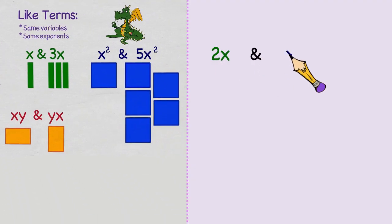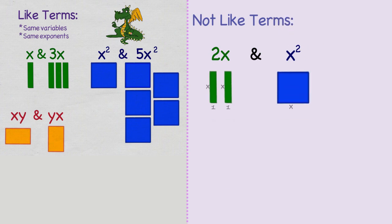But 2x and x squared are not like terms. And when we look at our algebra pieces, we can see that. 2x means that we have some unknown value x two times. While x squared is that number times itself. And clearly, x cubed is also not a like term since that would be x times x times x.